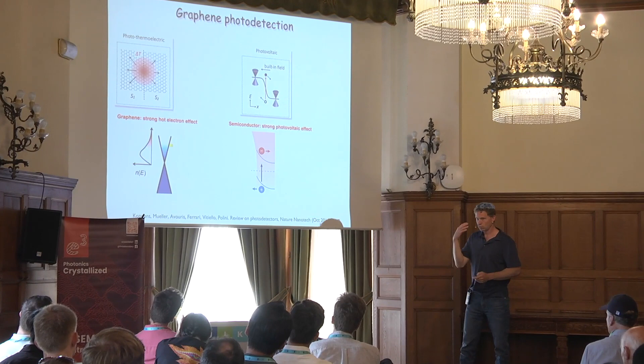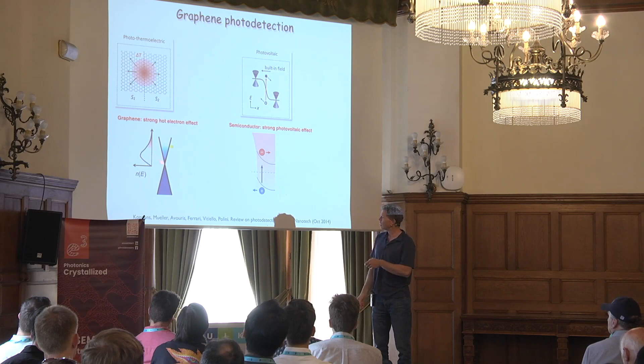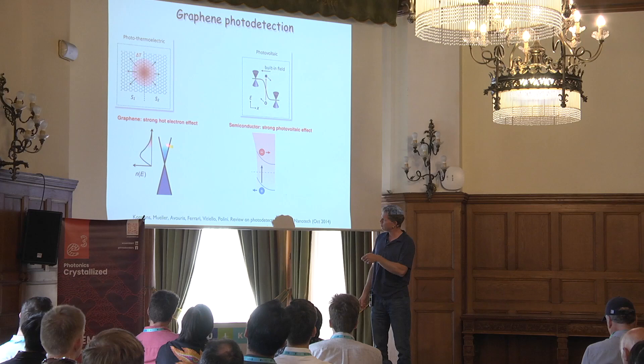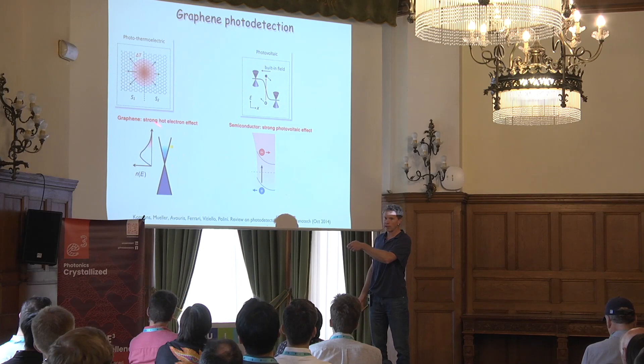What is preserved in graphene when I shine light is that electrons do get a bit hotter. Even if electrons and holes recombine, what happens is the Fermi-Dirac distribution is smeared out a bit. The more light I shine on the system, the hotter it gets. But it's not the phonons — it's actually the electrons that are hot.